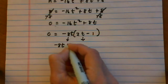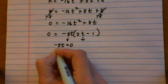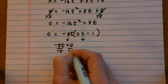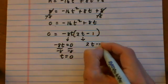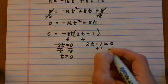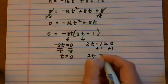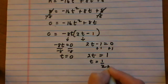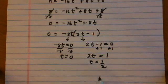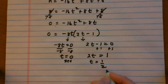So now we have negative 8t equals 0, dividing both sides by negative 8. We get one answer, t equals 0. Or 2t minus 1 equals 0. So now we solve for t. 2t equals 1, dividing by 2, t equals 1 half. And that would be in seconds for both of them.